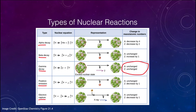In alpha decay, an element ejects out an alpha particle or a helium nucleus and leaves behind a new element. In this case, the atomic number will decrease by two and the mass will decrease by four, giving us a completely different element.